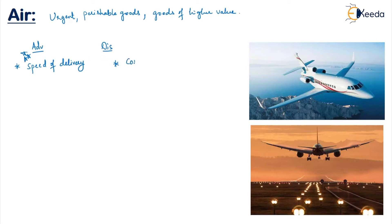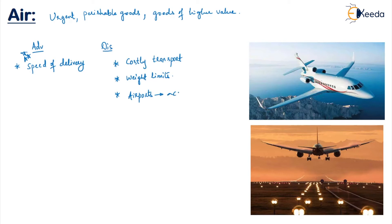What are the disadvantages of air transport? The first big disadvantage is that it is a very costly transport system — the costliest of all transport systems. The weight is also limited; we can only carry a certain weight in a flight, making it very expensive to transport heavy goods. Additionally, like ports for water transport, we have to go to airports to get access, so in places where there is no airport, air transport cannot be used. Accessibility is also a key disadvantage.